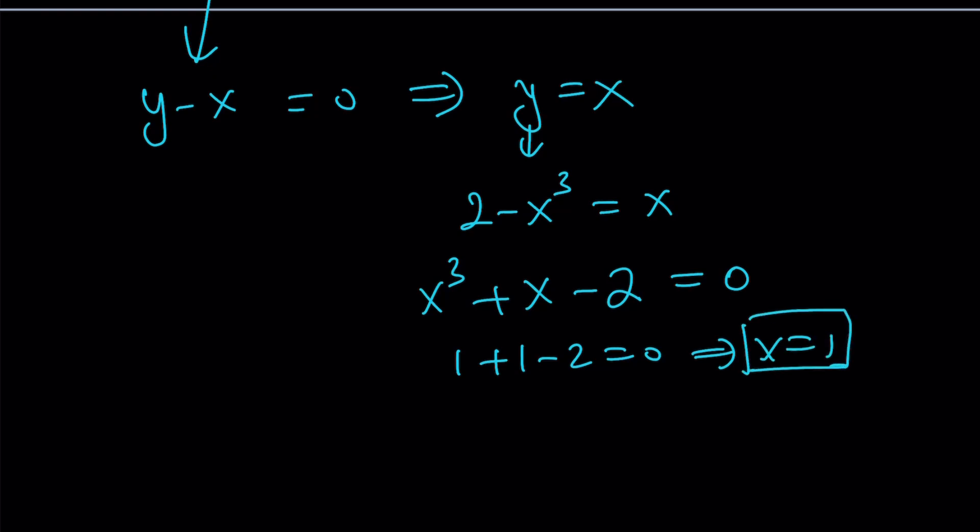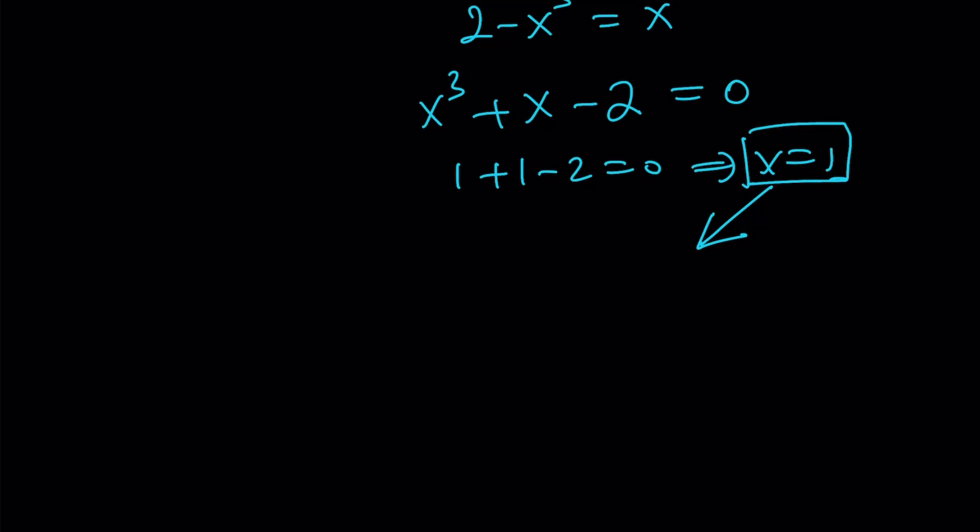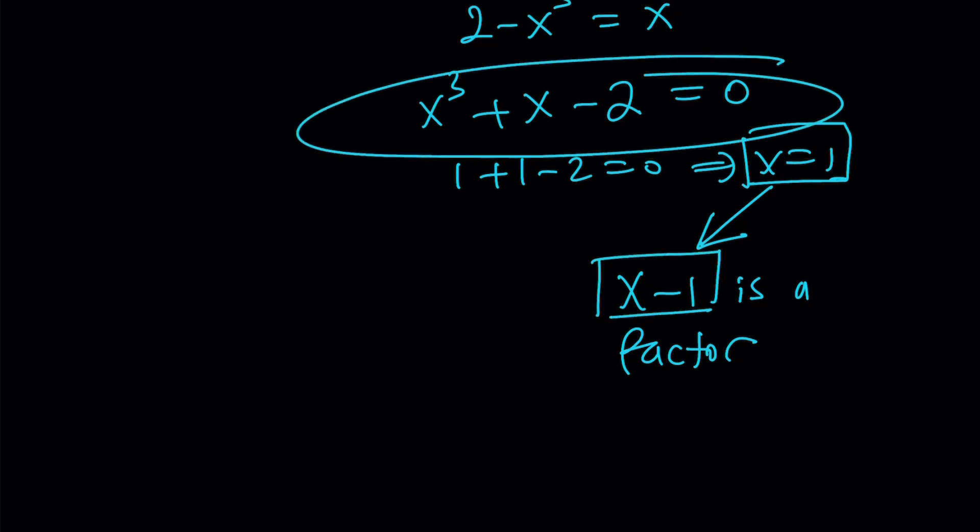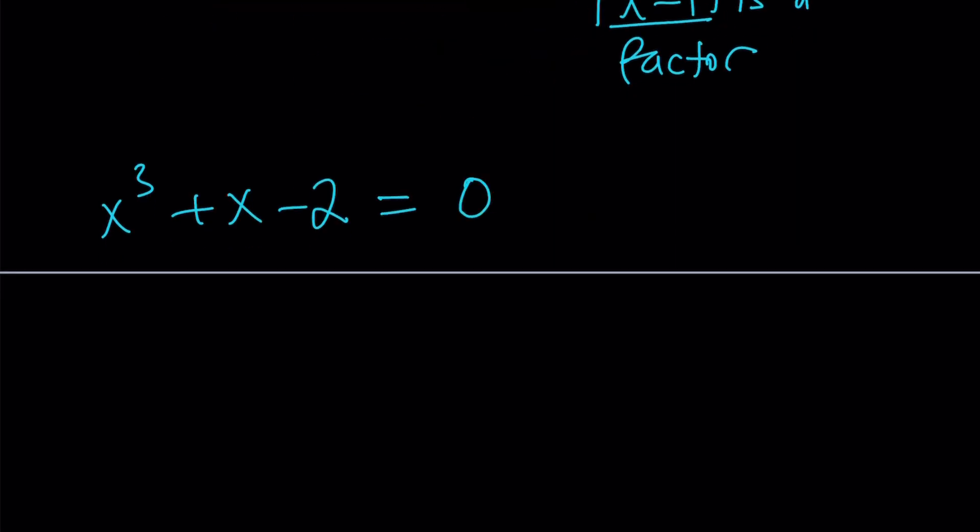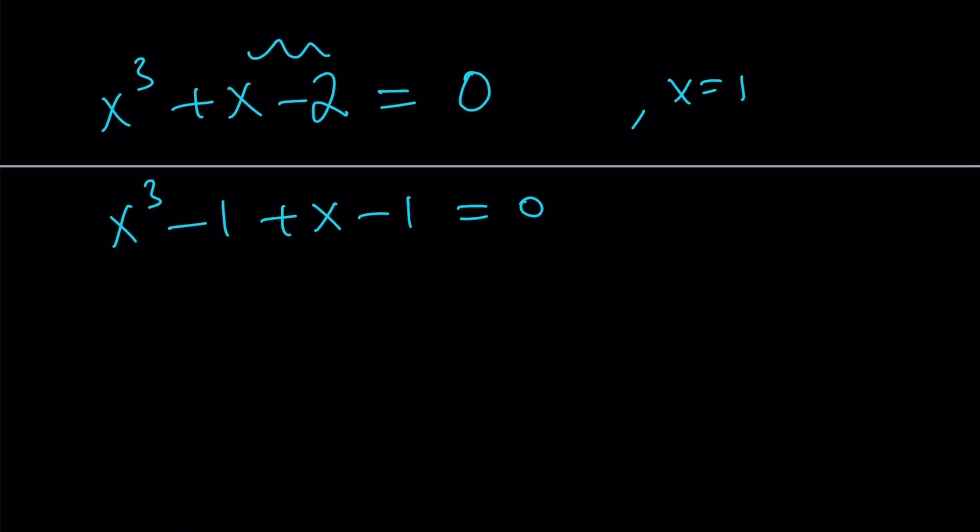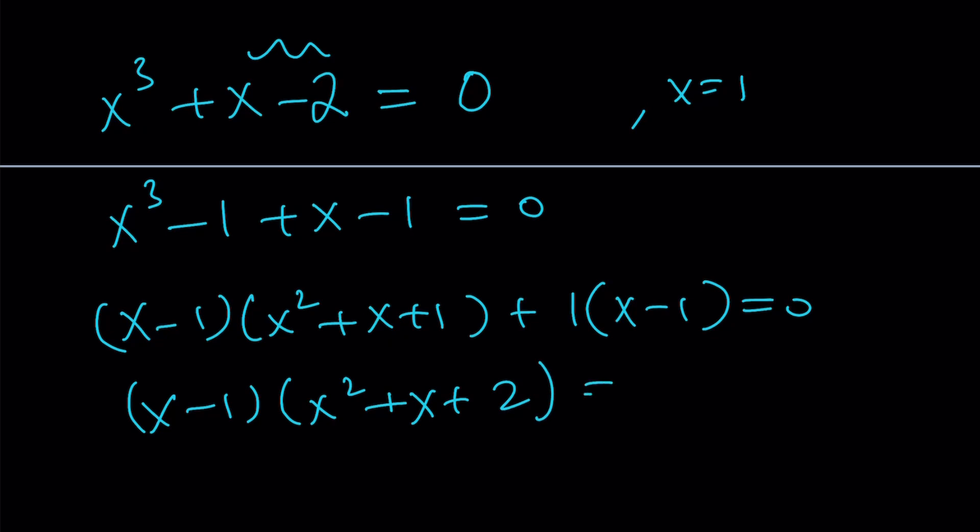We only got one of the solutions, but for a cubic, that's a lot of progress. So what we can do next is factor this expression using the fact that x equals 1 is a solution. That implies x minus 1 is a factor. So factor theorem gives us that. So now we can go ahead and pull out x minus 1 from here. x cubed plus x minus 2 equals 0. Can I just split up x cubed minus 1 plus x minus 1? This should be pretty natural. So I can now x minus 1 times x squared plus x plus 1 plus 1 times x minus 1 equals 0. x minus 1 out and x squared plus x plus 2 equals 0.